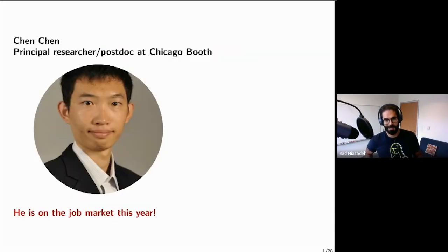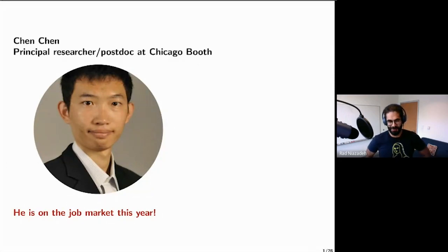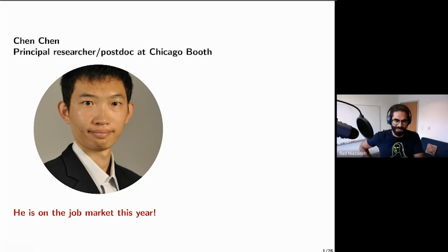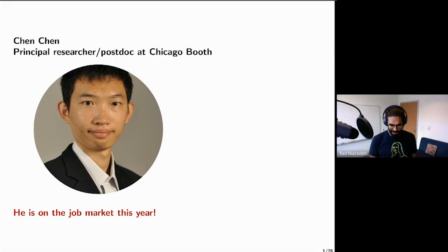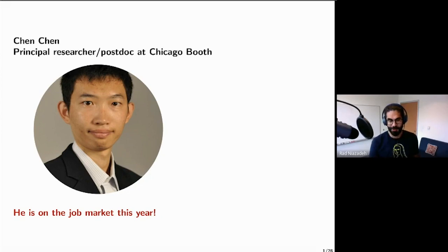Before proceeding to the talk, let me do a little bit of advertisement for my postdoc Chen. Chen is amazing. He's on the job market this year, and he's actually the main driving force behind this paper. Chen has been with us for about a year and a half, working on different questions at the intersection of combinatorial optimization, approximation algorithms, and what I call algorithmic data science. If I can convince you by the end of this talk that Chen's work is great, you should contact him.